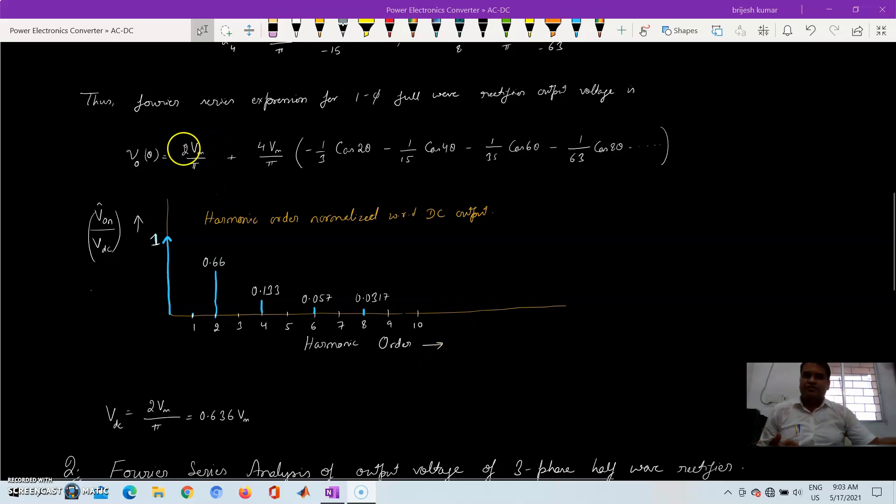So this value if normalized to 1, the other values will be in this order. So this is surprising to see that we are using a full wave rectifier and in the full wave rectifier we are getting the output voltage Vdc as 0.636 Vm and we normalize it to 1.